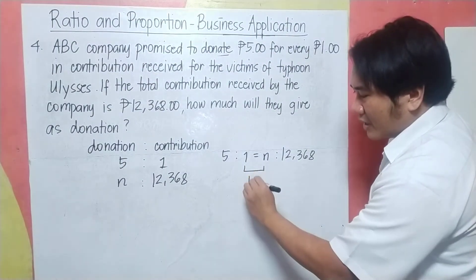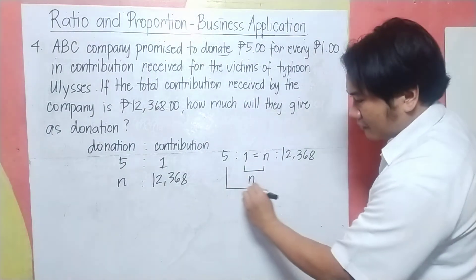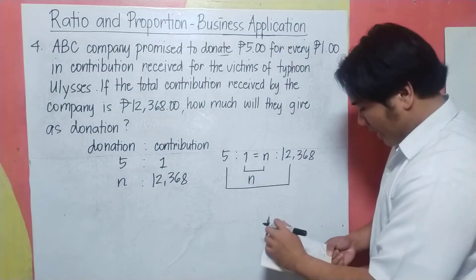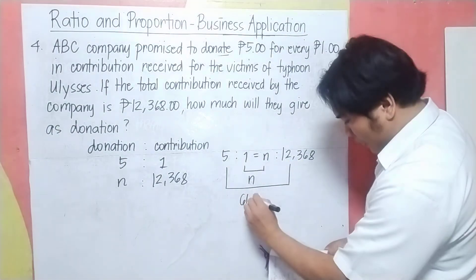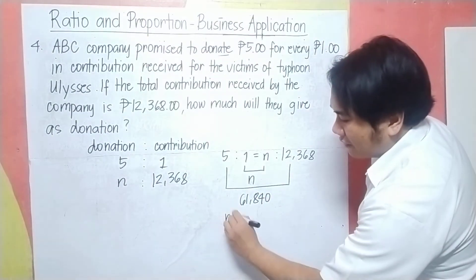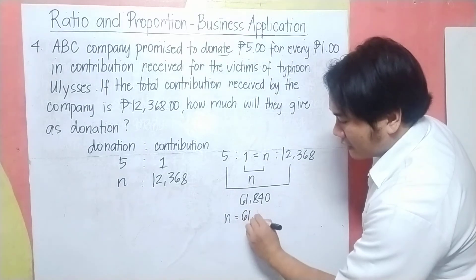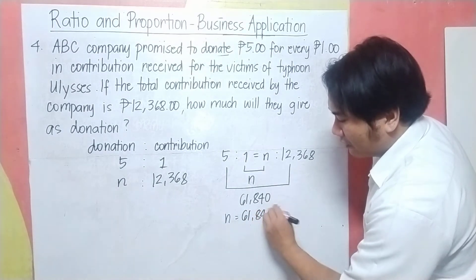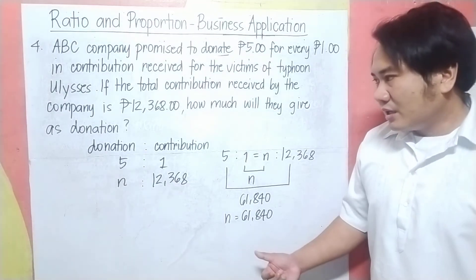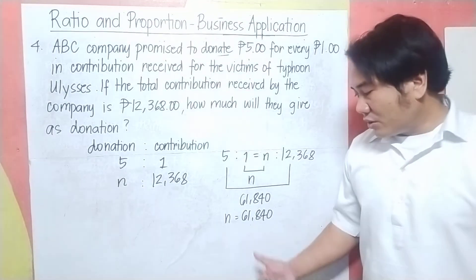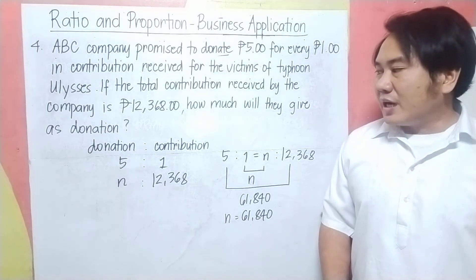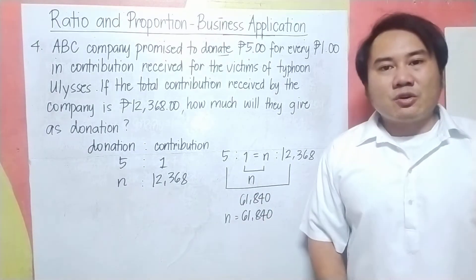To solve for N, we multiply the means and the extremes: 1 times N equals N, and 5 times 12,368 equals 61,840. Therefore N equals 61,840. ABC Company will give a donation of 61,840 for this corresponding contribution.